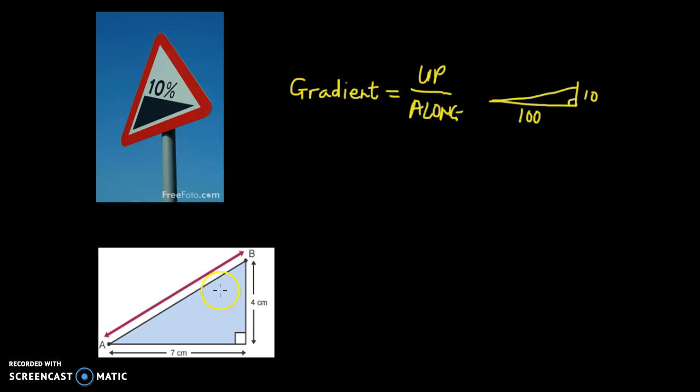Now look at a more theoretical example. To calculate this gradient, use the same formula again: up over along. In this case, our up is 4 and our along is 7.